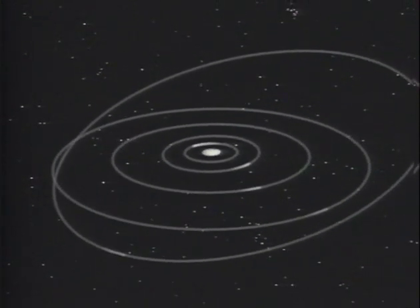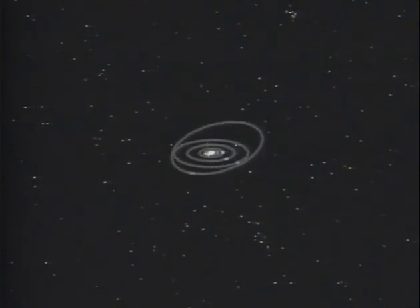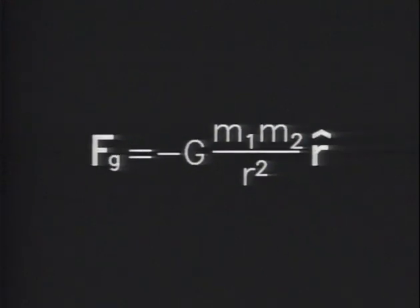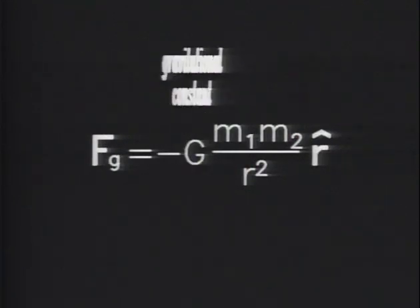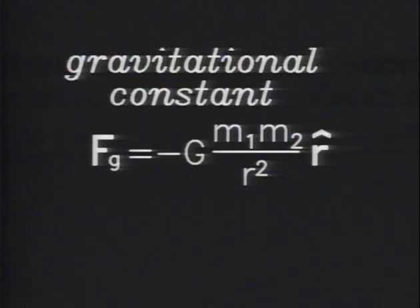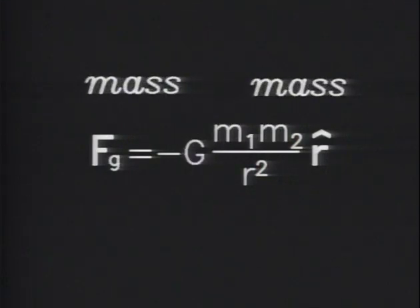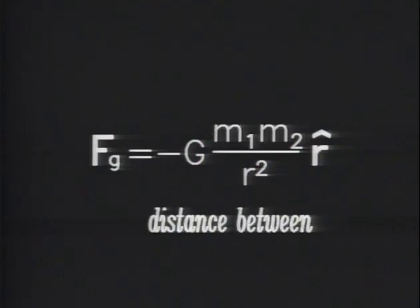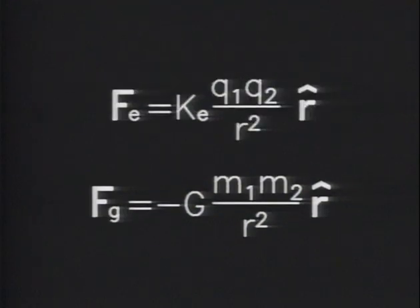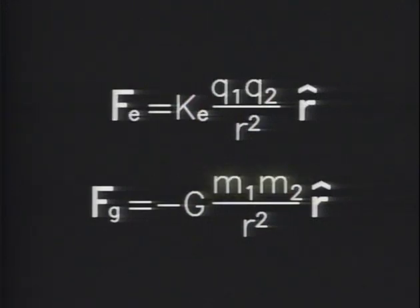The formula for electricity is strikingly similar to the one for gravity. Gravitational force pulls the nine planets in orbit around the sun. The force is equal to minus a constant g, times the product of the masses, divided by the square of the distance between them. The natures of mass and charge are, for the most part, still unknown. But obviously, mass is something that applies to gravity, and charge is something that applies to electricity.